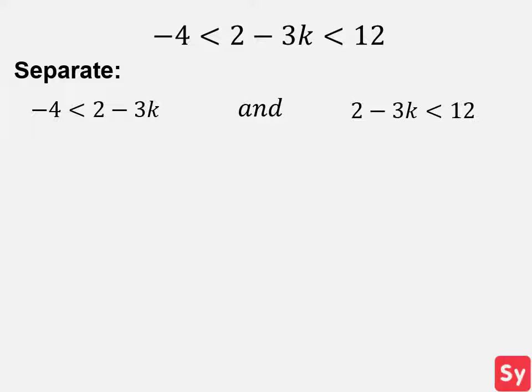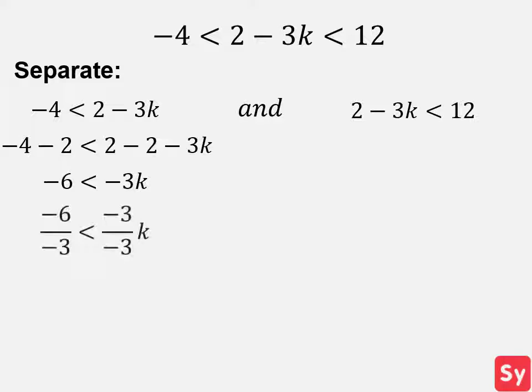We will first solve negative 4 is less than 2 minus 3K. We subtract 2 from each side, then simplify and get negative 6 is less than negative 3K. We next divide each side by negative 3. We simplify and get K is less than 2. Since we divide by a negative number, we change the direction of the inequality sign.